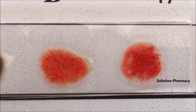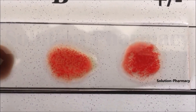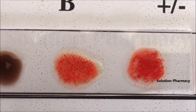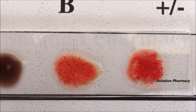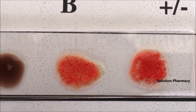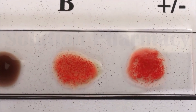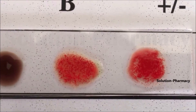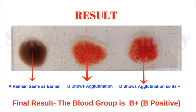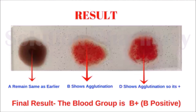After waiting, observe each blood drop on the slide for agglutination reaction — meaning red blood cell clumping, or hemolysis (breakdown of cells). By this agglutination we can determine the blood group. Here you can clearly see that agglutination reaction (clumping and hemolysis) occurs in the blood drop marked as B and also in the drop marked as +/−, but the blood drop marked as A is still clear — no agglutination reaction occurs there.